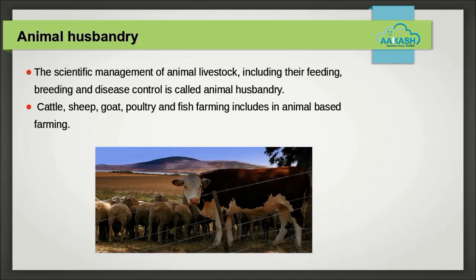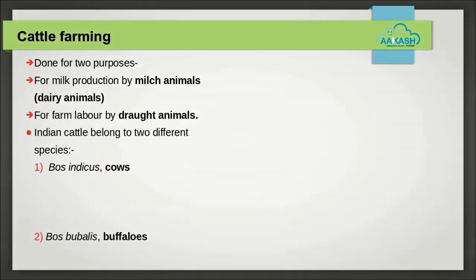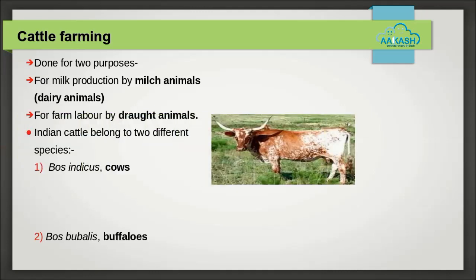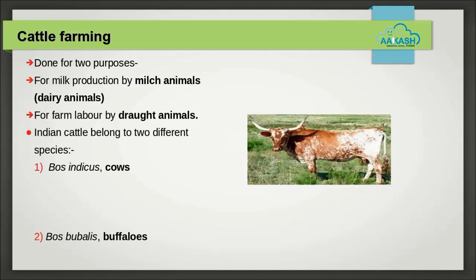Cattle farming is done for two purposes: for milk production and for drought labor for agriculture. Milk-producing females are called milk animals, and those used for farm labor are called drought animals.